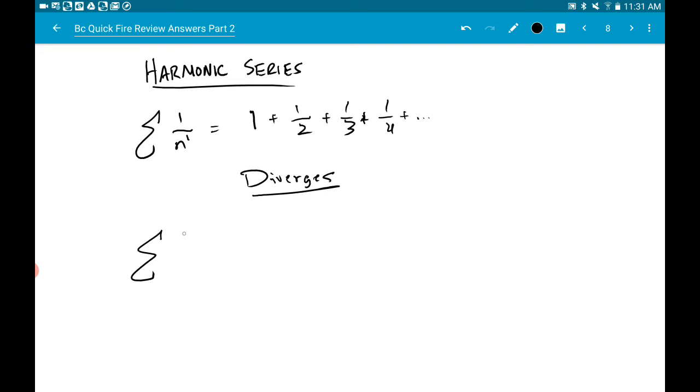Interestingly enough, the one I just did on the last page, if you have an alternating harmonic series, and that actually is the name for it, where you have something like this, that one converges. The original harmonic series diverges.